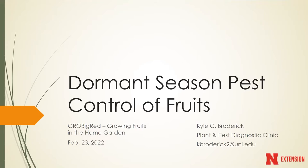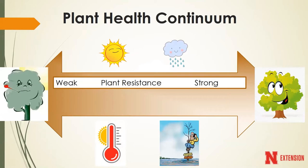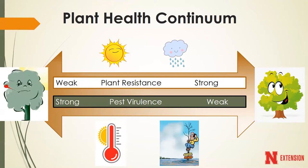Dormant season control of pests in different and various fruits. As I was thinking about this topic, we always have to think about the plant health continuum. No different than you and I, the healthier a plant is, the better it will be able to fight off anything else. This is not only the case during the season when the trees are actively growing, but also during the dormant season. Trees that go into winter with a lot of stresses will succumb to dormant season stresses more easily than their healthy counterparts.